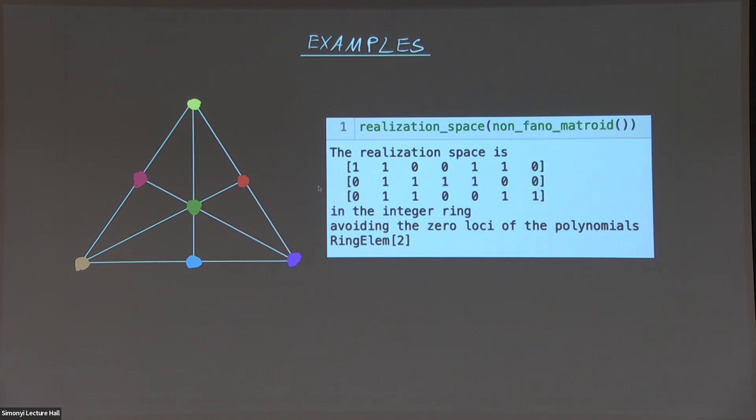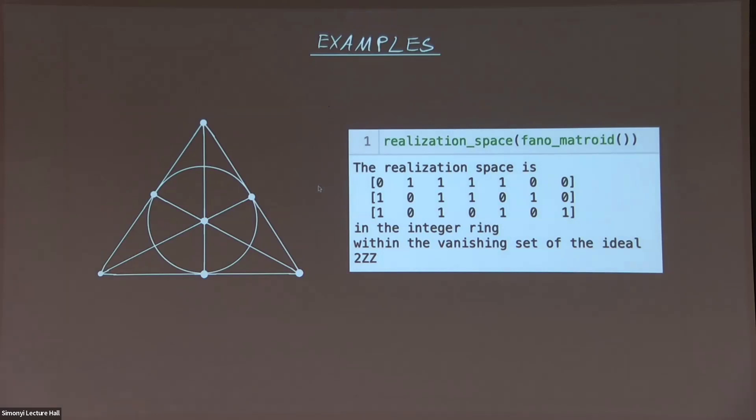So the first example is the matroid we've seen before. This matroid actually is a prominent matroid. It's called the non-Fano matroid. And so if you ask about the realization space of the non-Fano matroid, the output looks like that. So the matroid up to permutation of the columns is the same matroid I showed you before. And it says, in the integer ring, avoiding the zero locus of two. And so this means that we compute the realization space of all possible fields. And it's a realization as long as two is non-zero. And that just means over all fields where two is non-zero, meaning over all fields of characteristic non-two. There's a related matroid, so it's the Fano matroid where we get a very similar matrix, but the output is kind of the opposite. It says, this is a realization within the vanishing set of the ideal two. So this means it's a realization as long as two is zero. And so this means it's a realization over all fields of characteristic two.